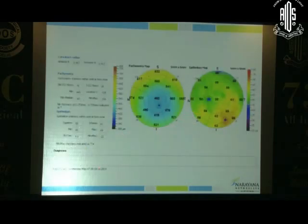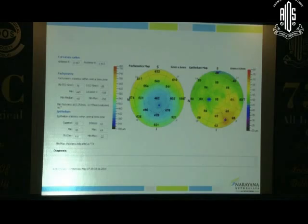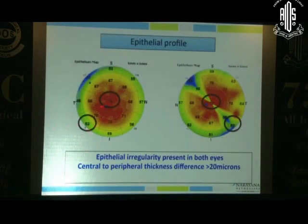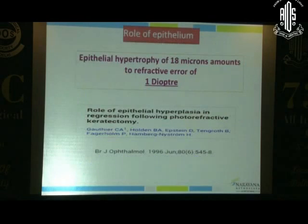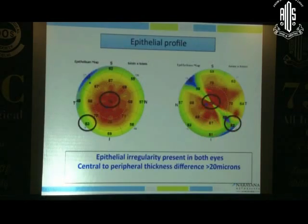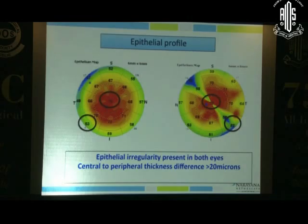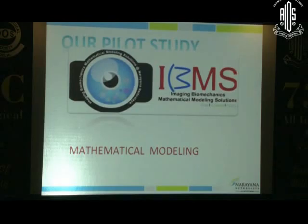The third important factor is how the epithelium remodels after surgery. For example, you put an incision and that area has hyperplastic epithelial change while the other side is completely normal. In this slide there's a 53 and 76 in the center, with one axis at 52 and the other at 71. The epithelium itself can cause a refractive change — there is a paper showing close to 18 to 20 microns of epithelial change, which can cause a full diopter of change in refractive error. So the key factors are: foundation, biomechanics, and epithelium.